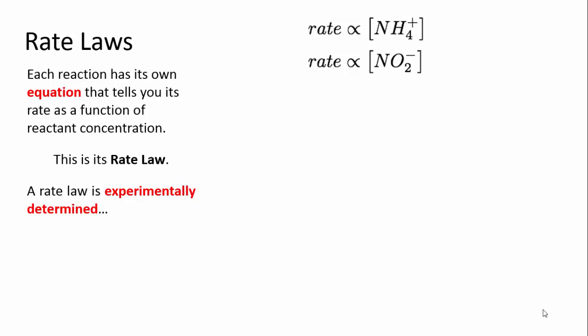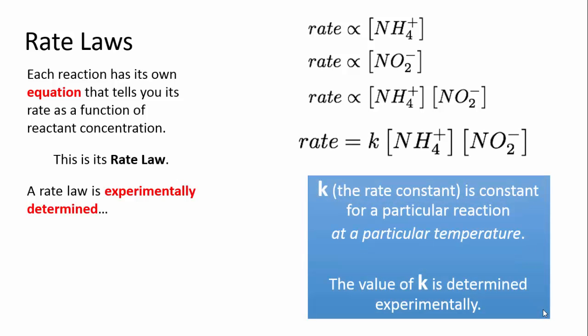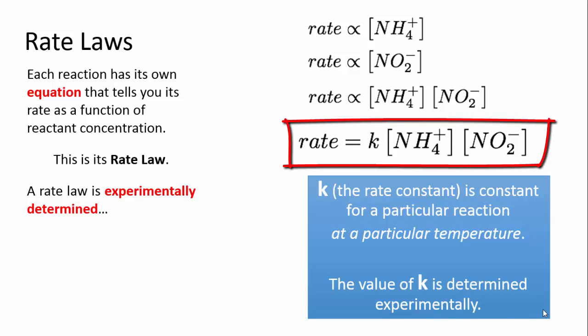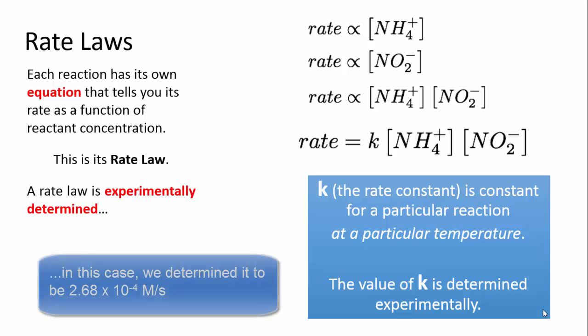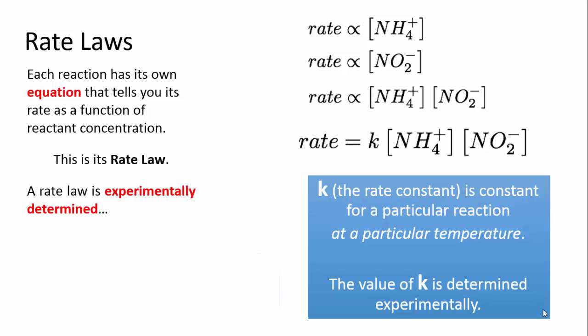To summarise: for this reaction, the rate is proportional to both the concentration of ammonium and that of nitrite, and therefore proportional to their product. To turn this into a proper equation, there must be a constant multiplying the concentrations to give the actual numerical value of the rate — so we write the rate law as rate equals K times [NH4+] times [NO2-]. The rate constant is unique to a reaction at a particular temperature; it will change if the temperature changes, because temperature affects the rate of reaction — but we'll go into that later.